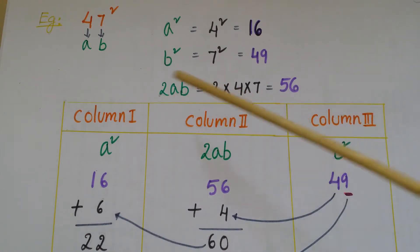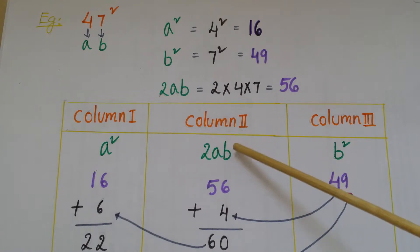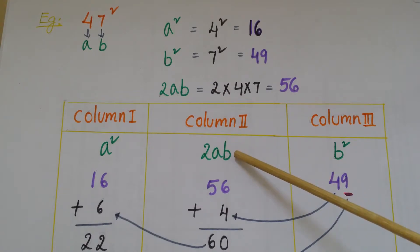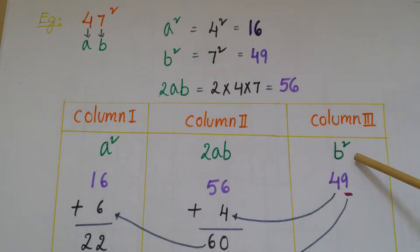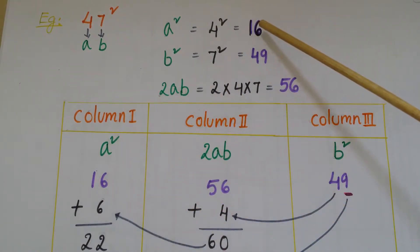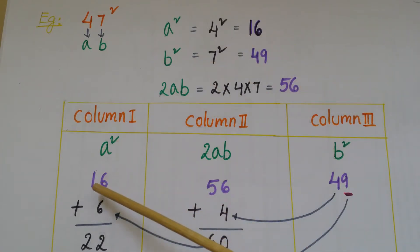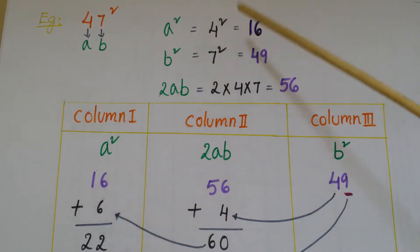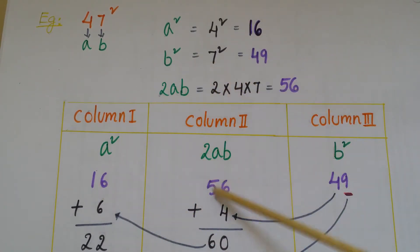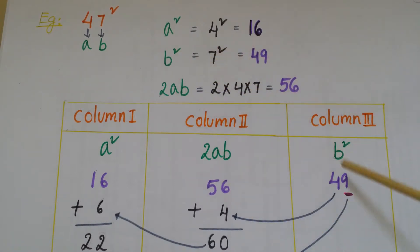In Column 1 you write a², in Column 2 you write 2ab, and in Column 3 you write b². Write the values we already calculated: a² = 16 in Column 1, 2ab = 56 in Column 2, and b² = 49 in Column 3.